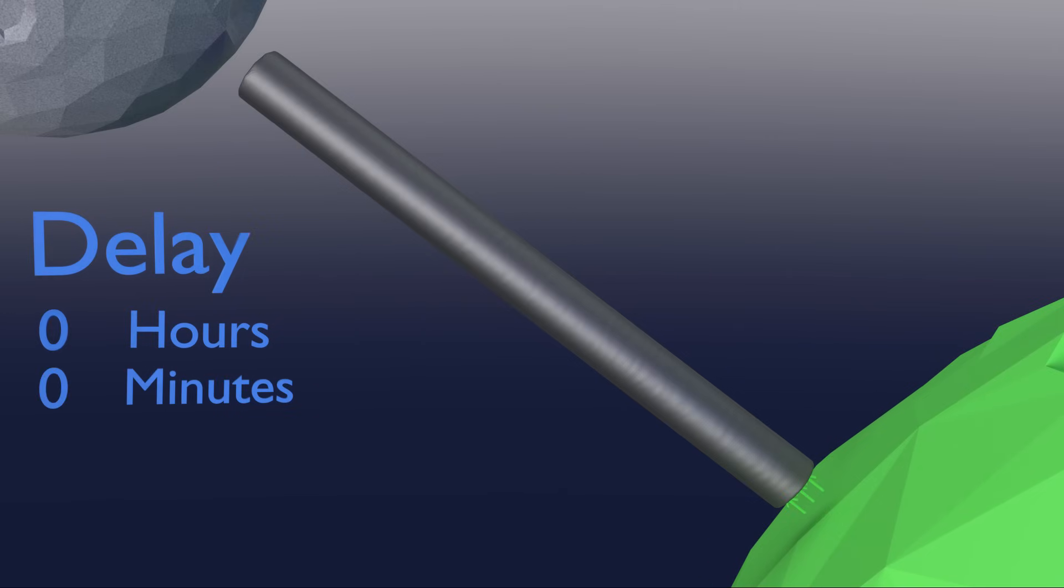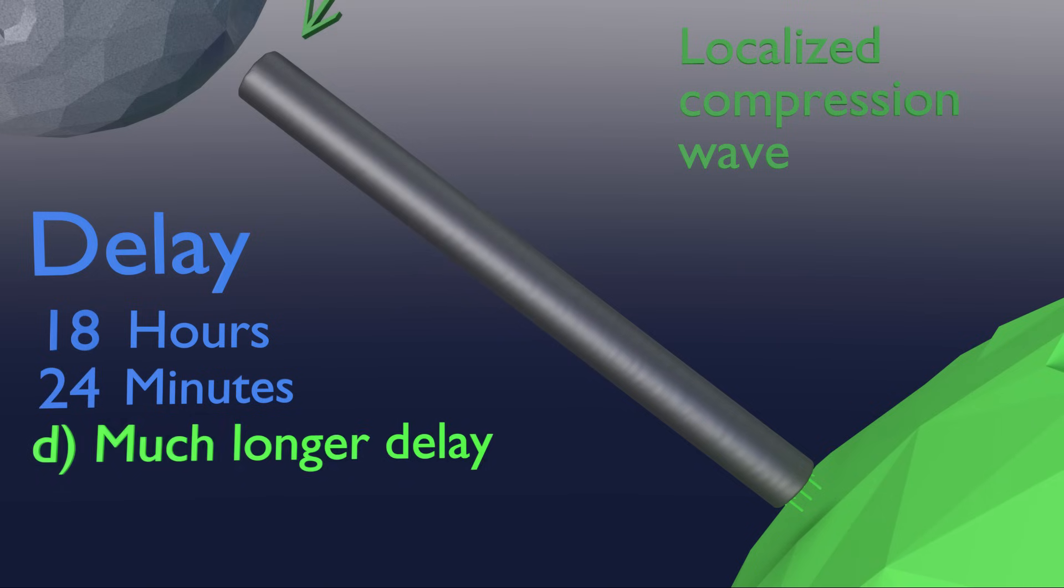As it turns out, the moon end of the bar would move one meter 18 hours and 24 minutes after we moved the earth end of the bar.